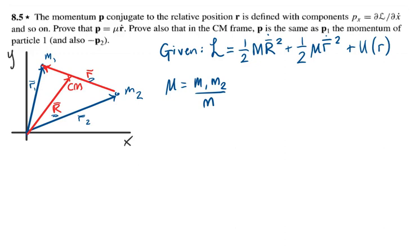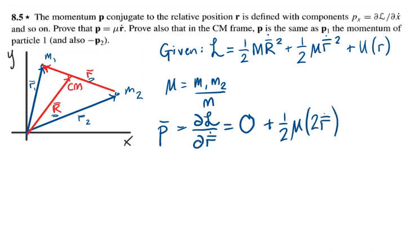So the first question asks us to prove that P equals μ times Ṙ. So P is equal to ∂L/∂Ṙ, which for the first term is zero because lowercase Ṙ does not feature in the first term. For the second term, it is ½μ times 2Ṙ, standard derivative. And for the third term, it's zero because this only features R, not Ṙ.